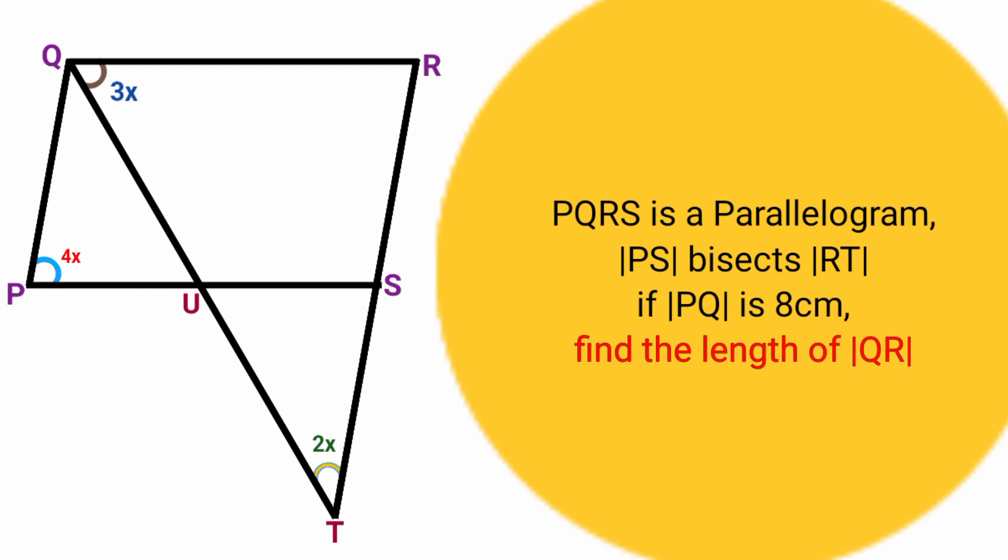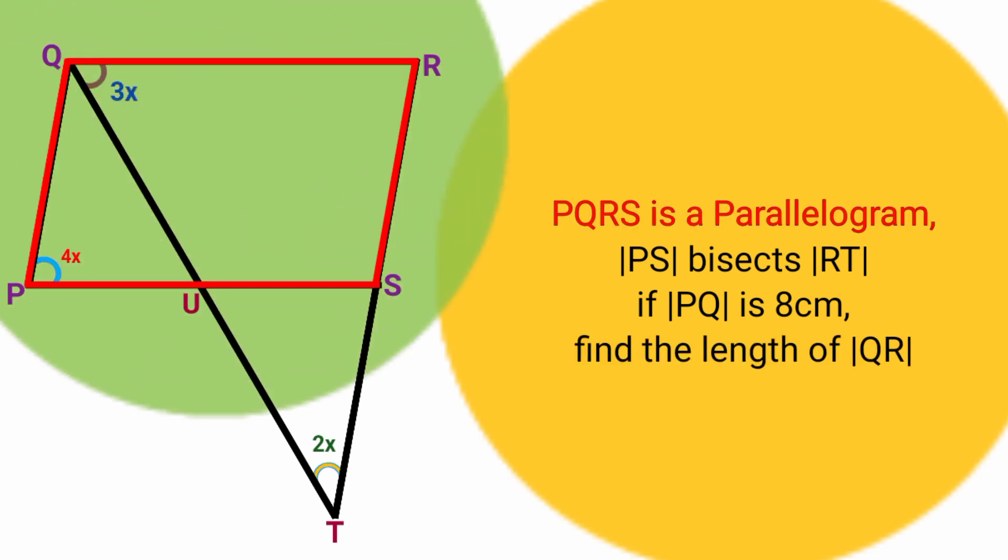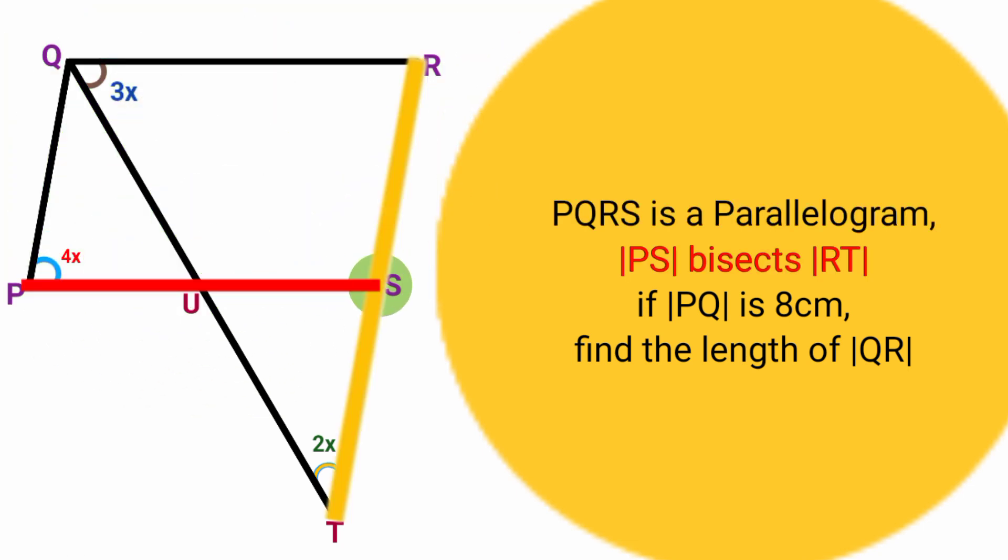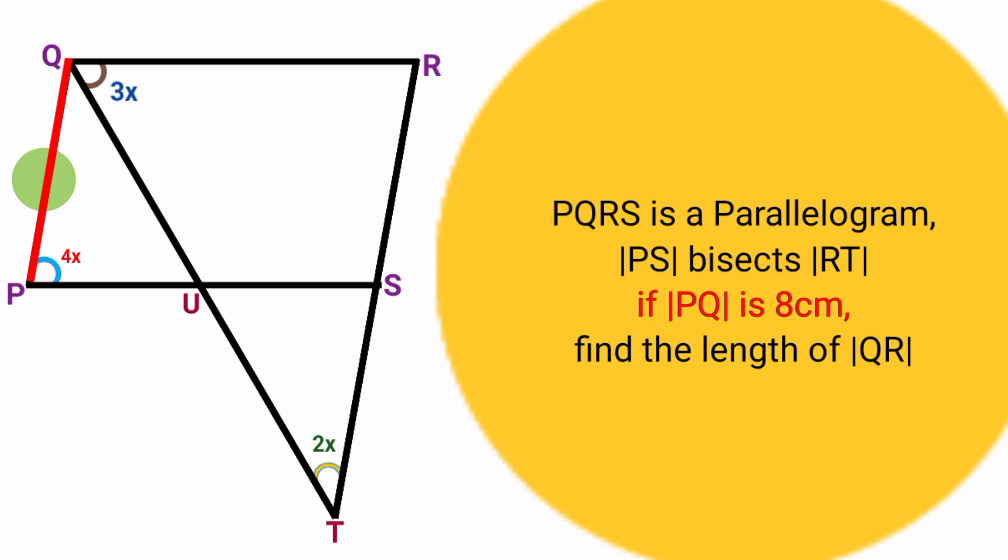In this question we are asked to find the length of line QR. They say PQRS is a parallelogram, line PS bisects line RT, and line PQ equals 8 centimeters.